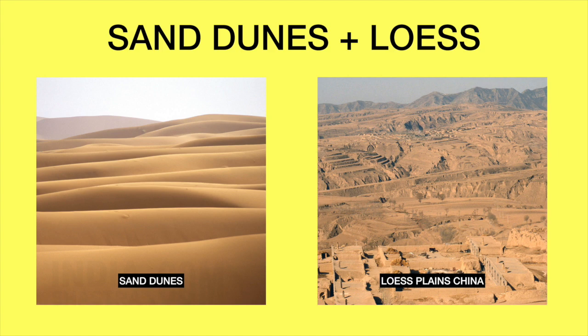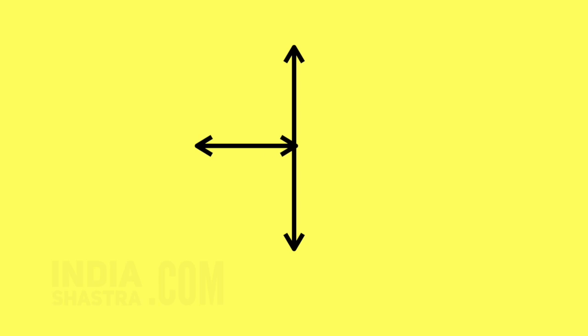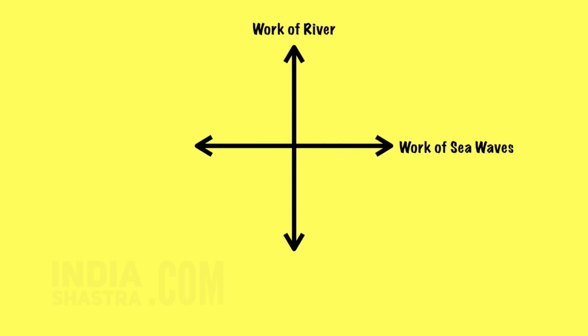So here in this video, we learnt about the landforms and landscapes created by agents like river, sea waves, ice and winds. Make sure that you are reading this chapter from the NCERT for consolidation. Thank you and have a good day.